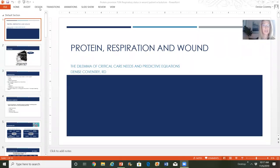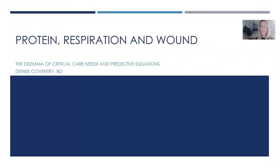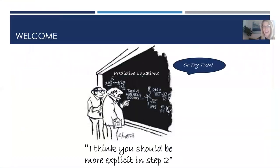Let's get started from the beginning. So let's talk about the dilemma of critical care needs and predictive equations, in particular how this relates to protein, respiration, and the wound. I think that if you are working on an applied project or your thesis, this is something that you can really relate to.